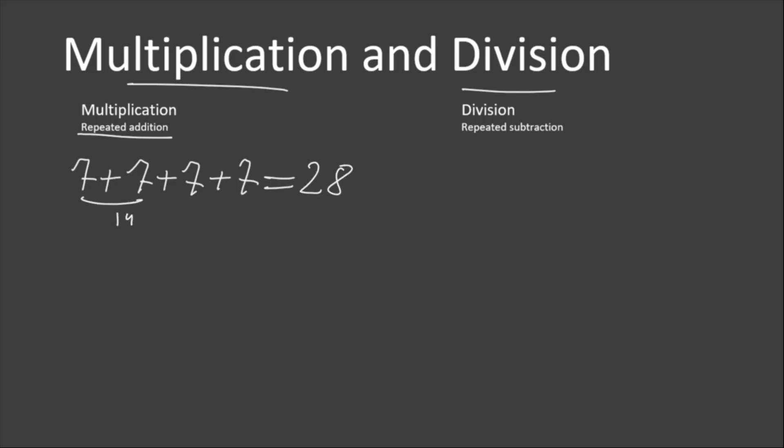7 plus 7 is 14, 14 plus 7 is 21, and 21 plus 7 is 28. Students, we are not always going to take a long time to add large numbers or repeated groups of numbers. Instead, we use multiplication.